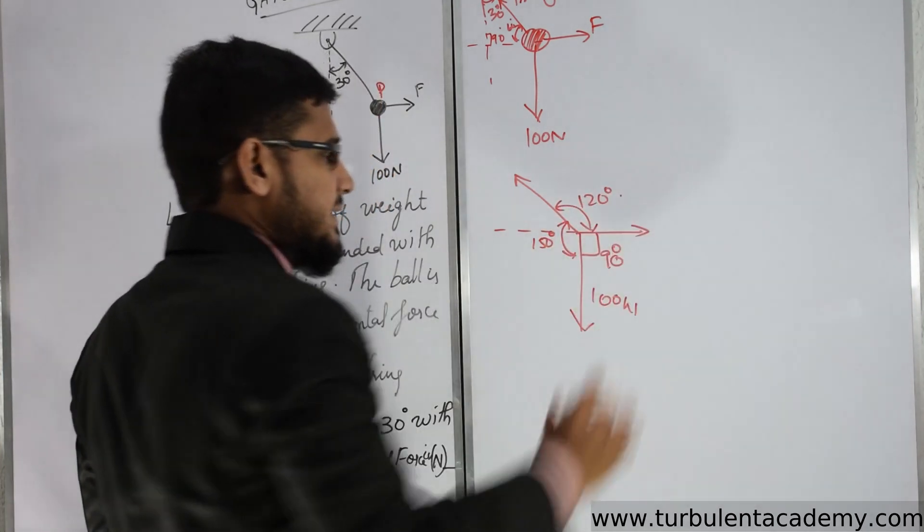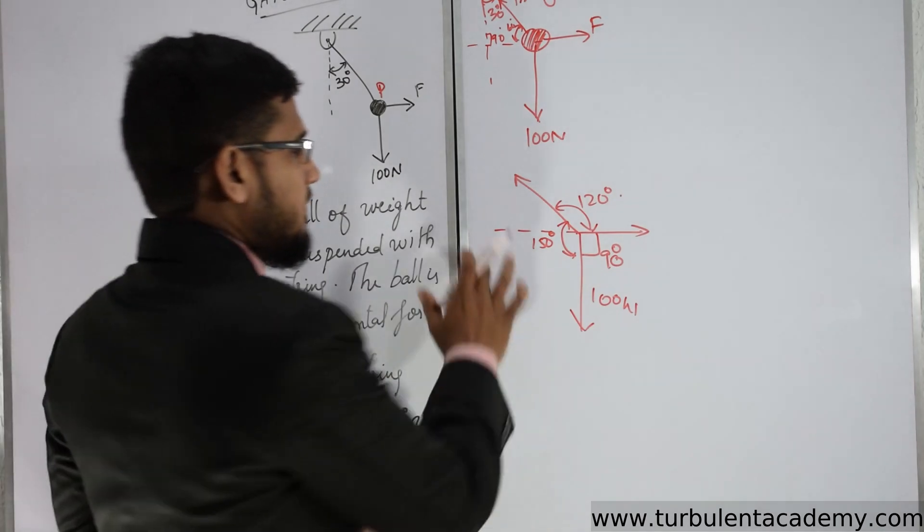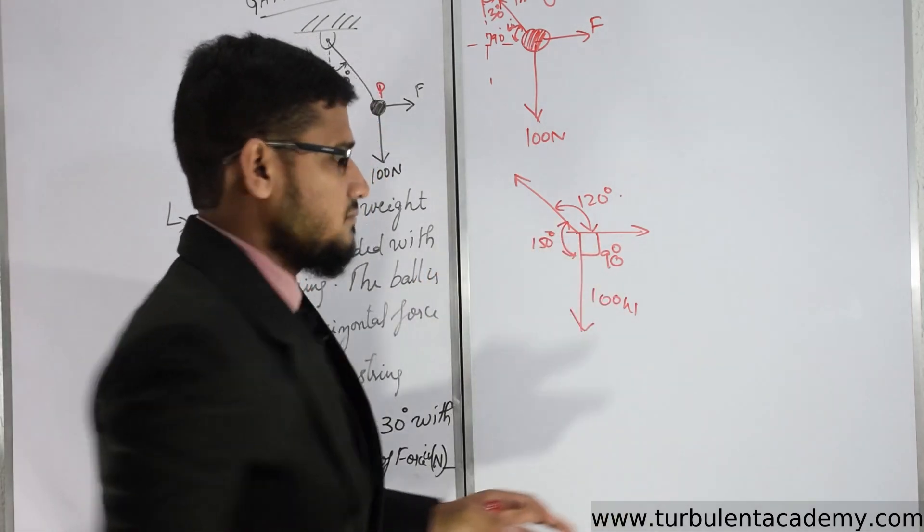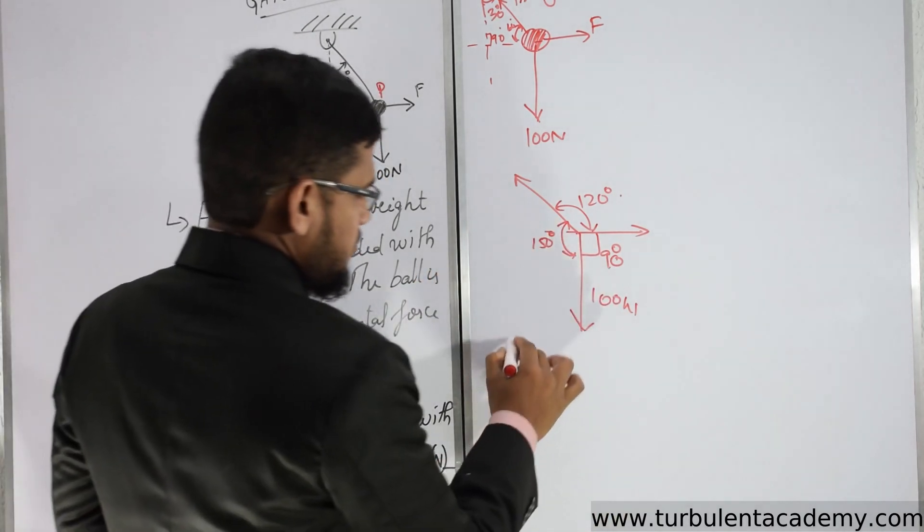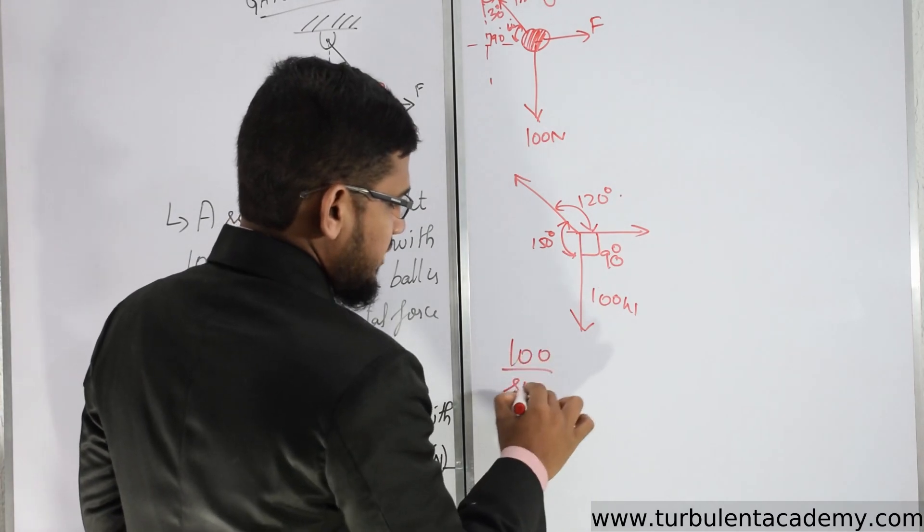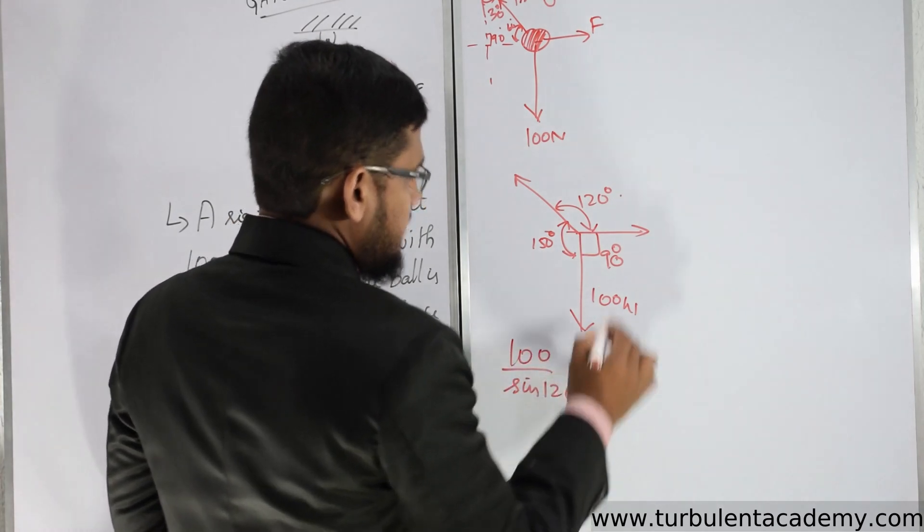So we have got Lamy's theorem. 100 by sine 120 equal to - this is going to be F, this is going to be T string.